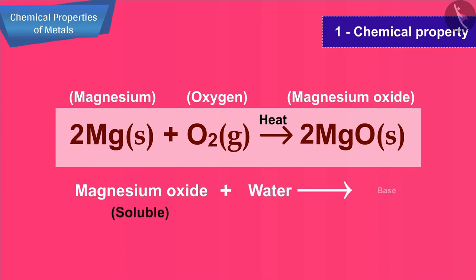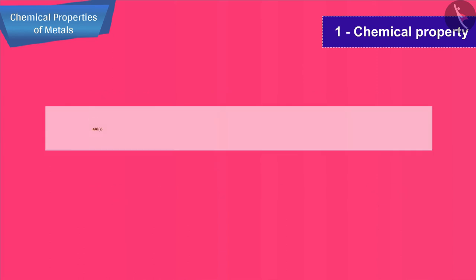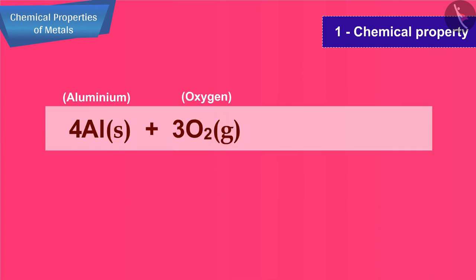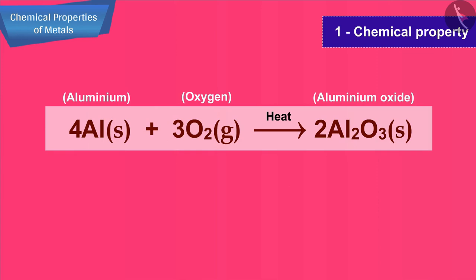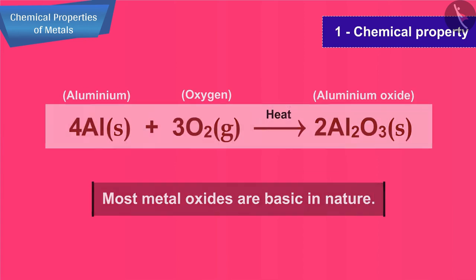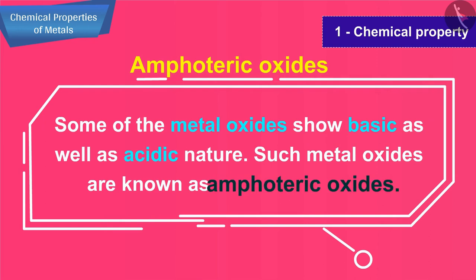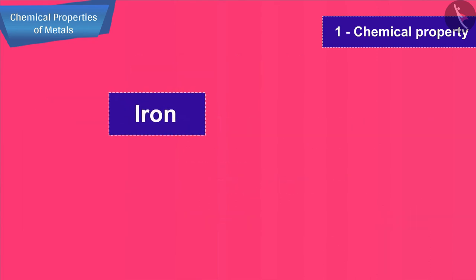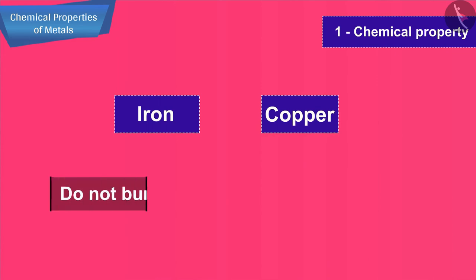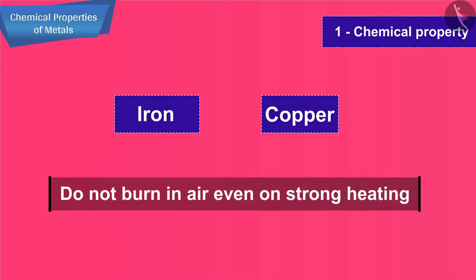Magnesium oxide is partially soluble in water, so it is a base. Aluminium metal burns in air on heating to form aluminium oxide. Although most metal oxides are basic in nature, some metal oxides show both basic and acidic nature, and such metal oxides are known as amphoteric oxides.